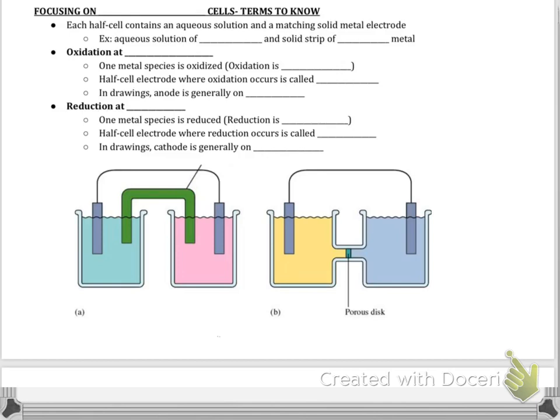Okay. So we're focusing mostly on galvanic cells. There's a bunch of terms to know. Some of these may be familiar, some not. Each half cell contains an aqueous solution and a matching solid metal electrode. That should make sense from the lab. So for an example, if you have an aqueous solution of zinc nitrate, ZnNO32, and a solid strip of metal, it's going to be zinc solid metal.